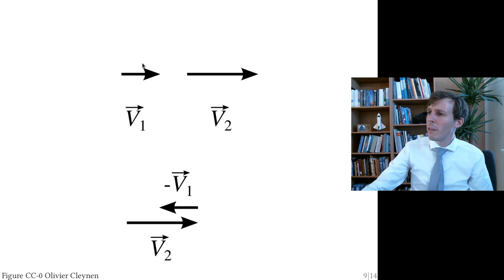Well, V1 is this vector. V2 is the same vector but longer. V2 minus V1 is basically V2 plus minus V1. What does minus V1 look like? You take this vector here and you flip it around, and then you get minus V1. So if now you add up V2 and minus V1, you get a vector here which is about half the length of V2. And this would be V2 minus V1.